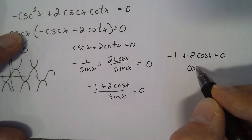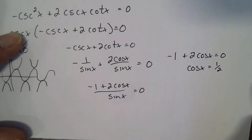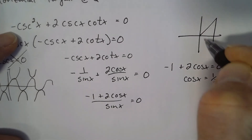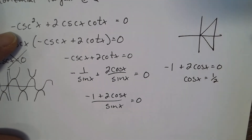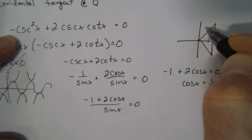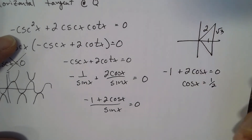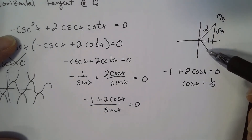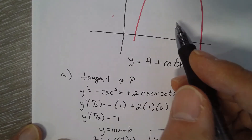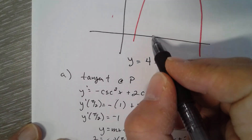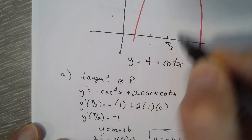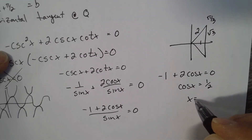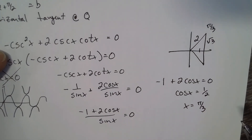Setting the numerator to 0: -1 + 2 cos x = 0, so cos x = 1/2. Cosine is positive in the first and fourth quadrants. The angle where cosine equals 1/2 is 60° or π/3, and also 5π/3. Looking at the graph, the relevant solution is between 0 and π/2, so x = π/3.